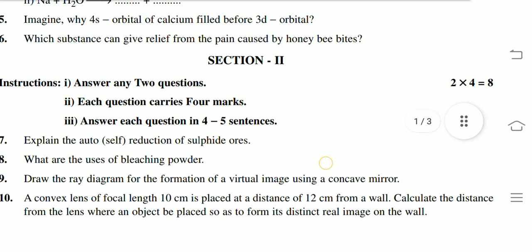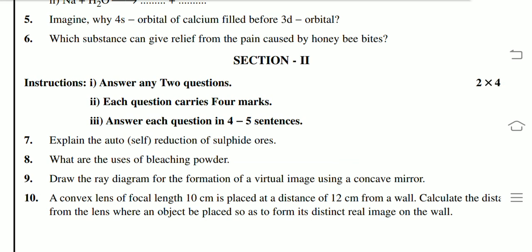Section 2: 4 marks questions, 2 into 4 is 8. Explain the auto-reduction of sulfide ores. What are the uses of bleaching powder?